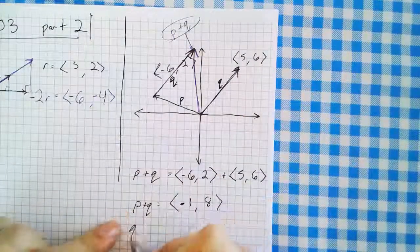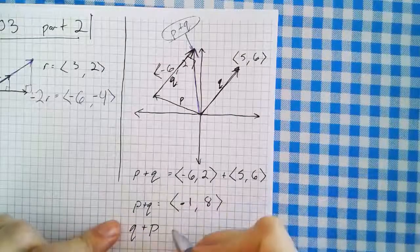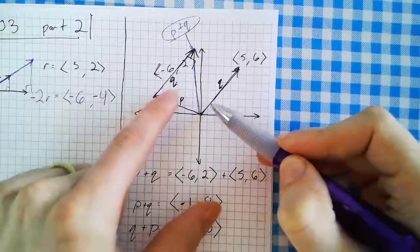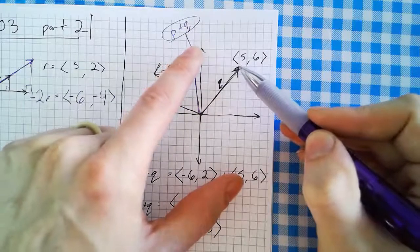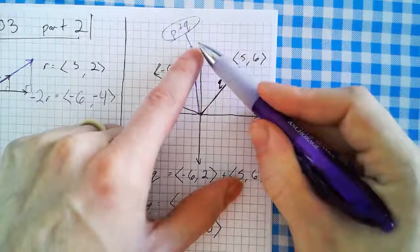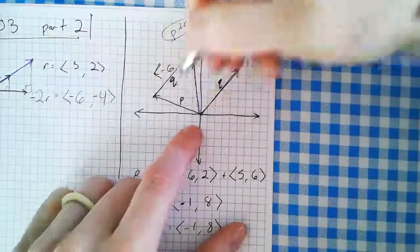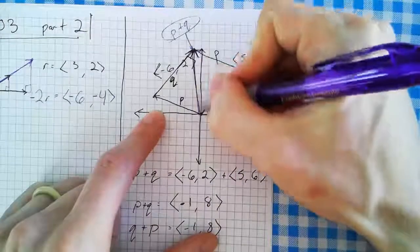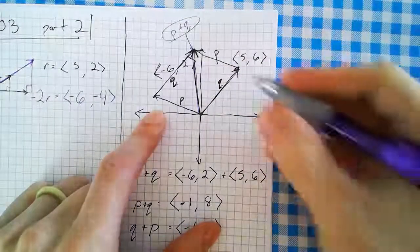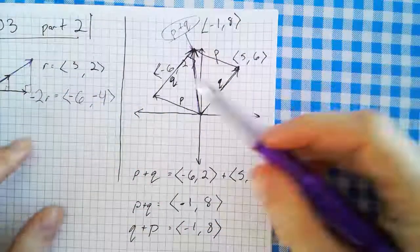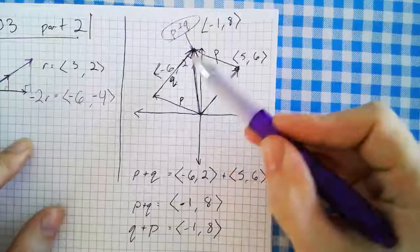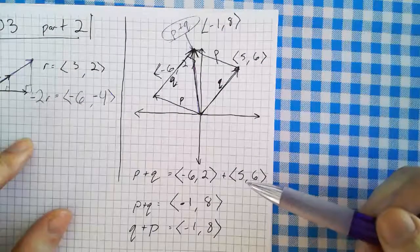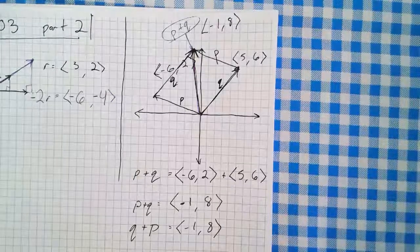Adding vectors is just taking the tail end of one and putting it at the tip of the other. What about q plus p? Same result: (-1, 8). You could also take the tail of p and shift it to the tip of q — that also gives the same purple vector. The two vectors form two sides of a parallelogram, and you get the sum by connecting the two corners of that parallelogram.